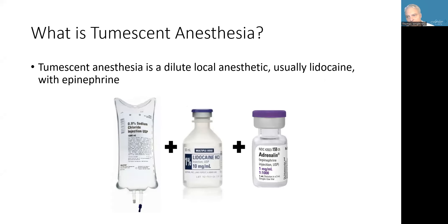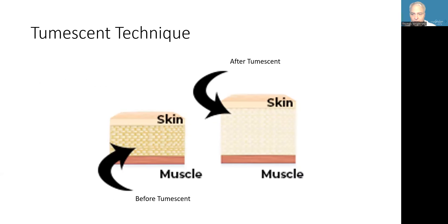First, I want to explain what is tumescent anesthesia. Tumescent anesthesia is when you dilute local anesthetic, usually lidocaine, with added epinephrine. The epinephrine decreases the risk of bruising and blood loss, and the local anesthetic provides the anesthesia. This is what it looks like. The word tumescent means swollen, and the mixture is infiltrated into the skin. The skin swells and becomes tumescent or hardens, and then we go.